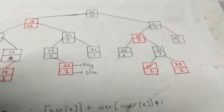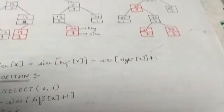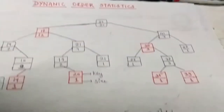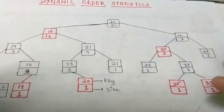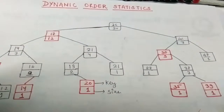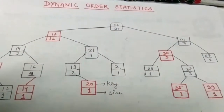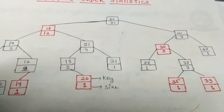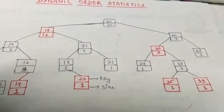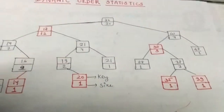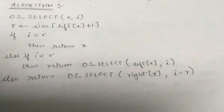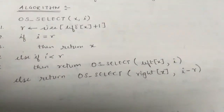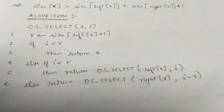Now, in order to find the ith element in the order statistic tree, we need to follow the OS Select algorithm. The OS Select algorithm is as shown. Let's see how it works.